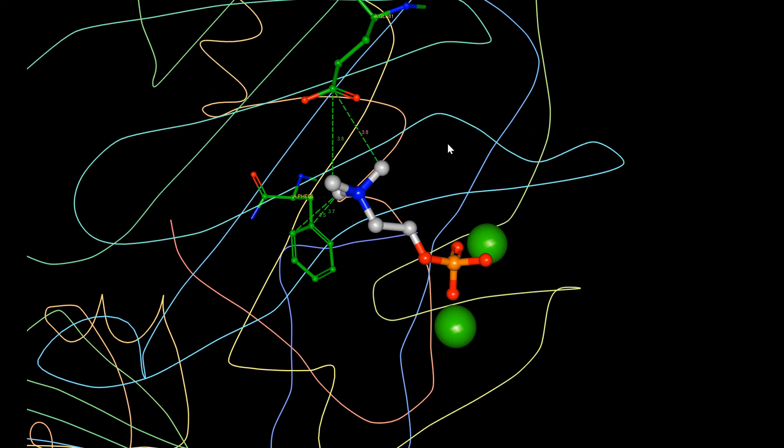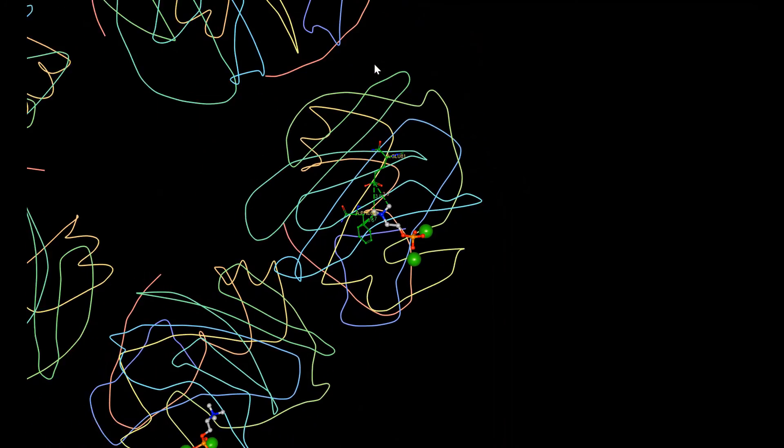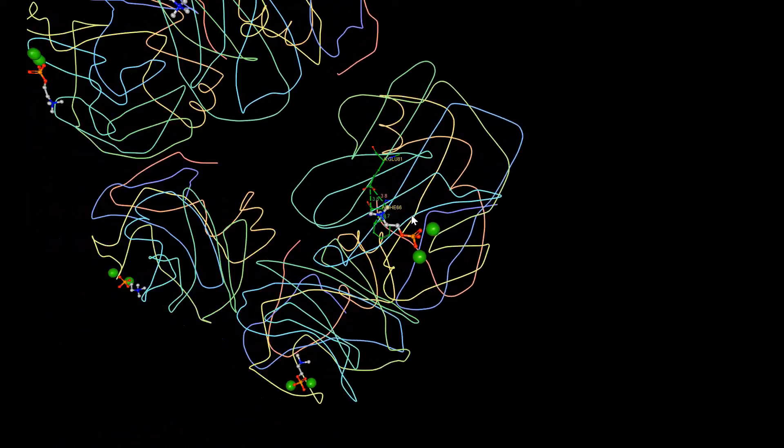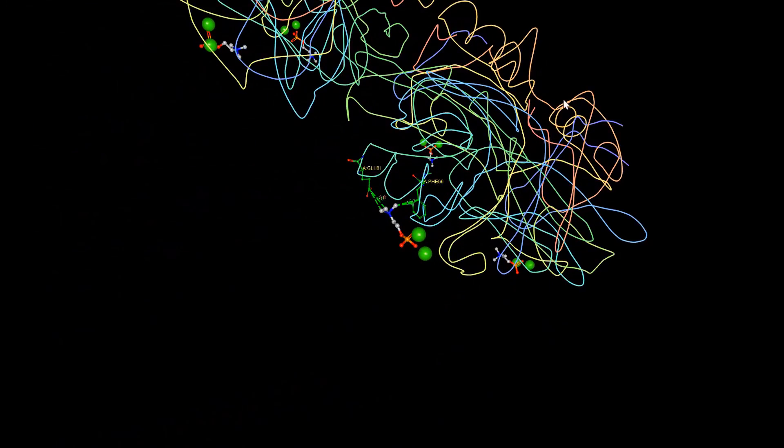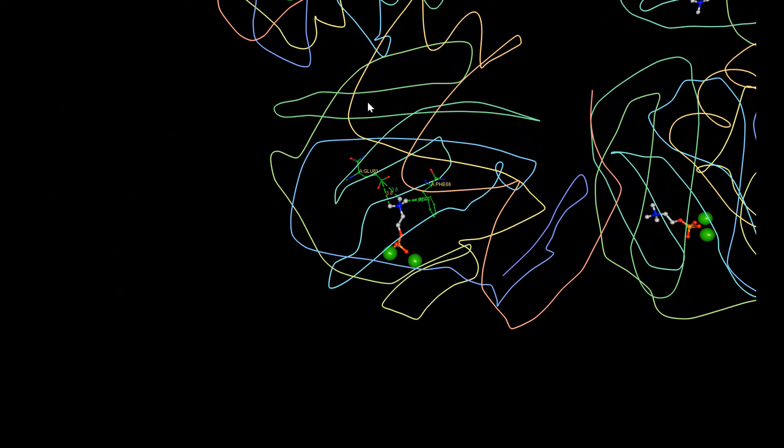The other side of the subunit is called the effector face. This is the side which binds C1Q and FC-gamma. The residues important for the binding of these molecules are aspartate-112 and tyrosine-175.